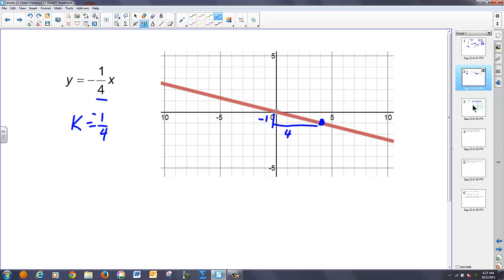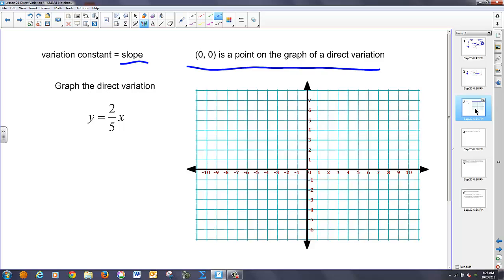So let's go back to this problem over here. And we want to take and graph this direct variation of y equals two-fifths of x. Well, we just found out that in a direct variation, all direct variations go through the point zero, zero. And our variation constant is going to be our slope. So our slope, m, is equal to two-fifths, which is equal to our rise over our run.